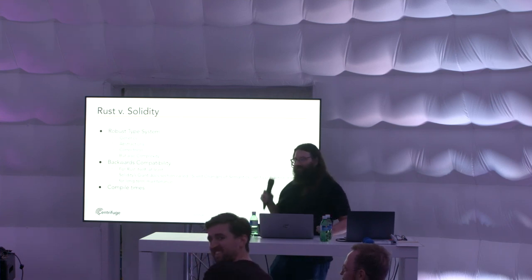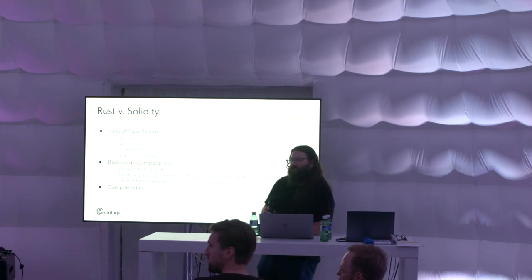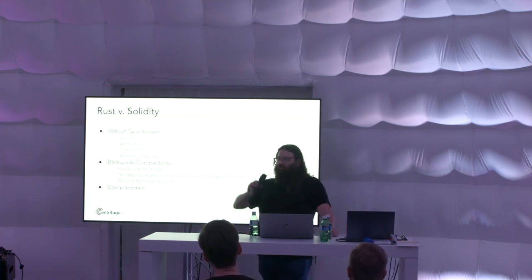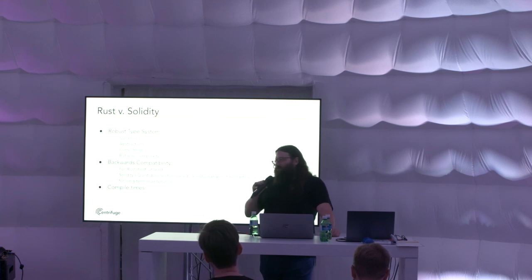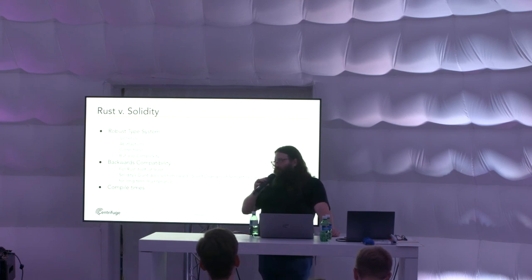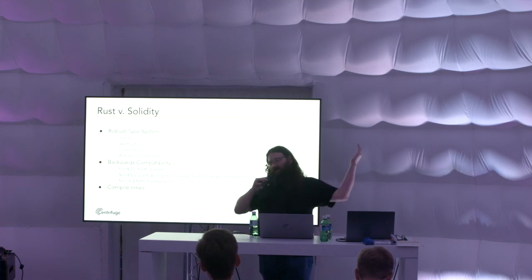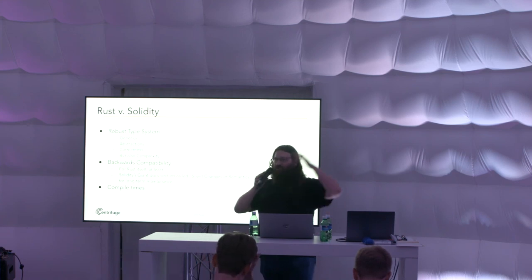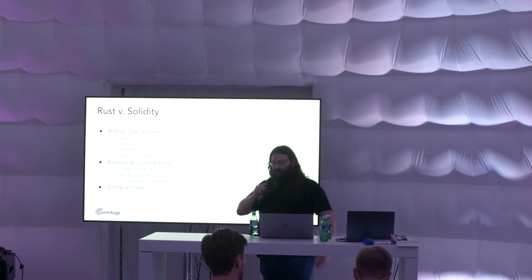Question: Can you explain why weights have to be estimated on-chain as opposed to the Ethereum approach where you give a node a transaction and it simulates it against the current head? Answer: My understanding is that it's related to using WASM and especially allowing the WASM environment to do things like JIT. We're not running in an interpreter where we can keep count of every virtual instruction — it's compiled and optimized by the JIT environment. It gives us a huge performance increase to just say this operation takes so many microseconds instead of counting every instruction.